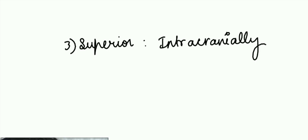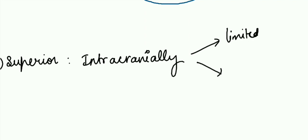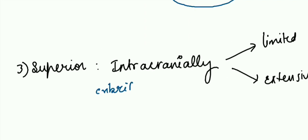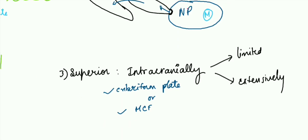And the third extension will be superior. Superior means obviously intracranial. It is of two types: limited or extensive. It occurs either through cribriform plate or through middle cranial fossa.